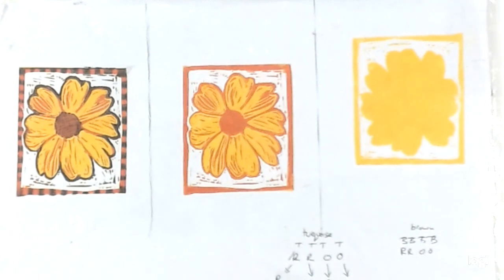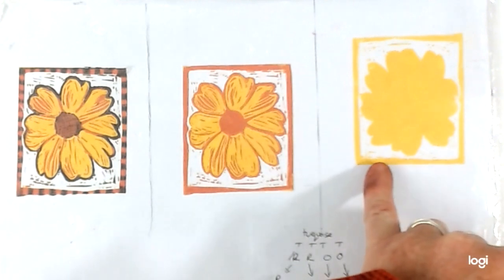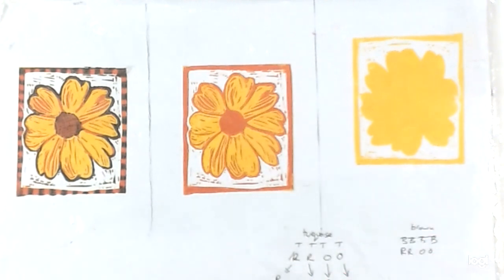In the third session, we'll be looking at reduction printing, which is where we cut the lino a little bit, print it, then cut some more away, print again, and so on. We cut two, three, four cuts to create a multicolored image. Have fun. Bye bye.